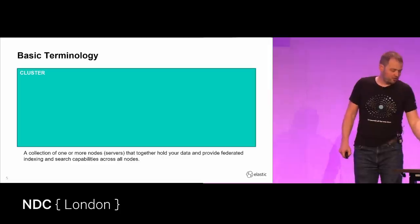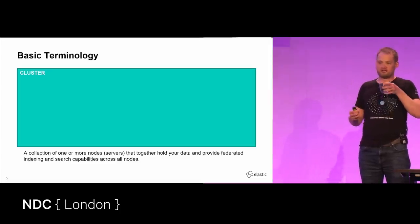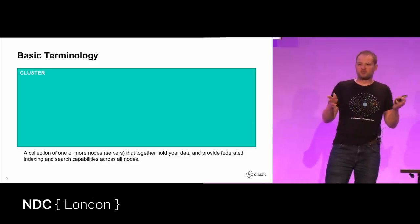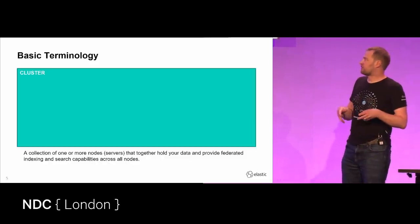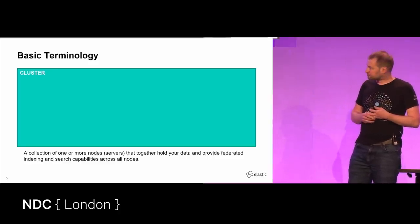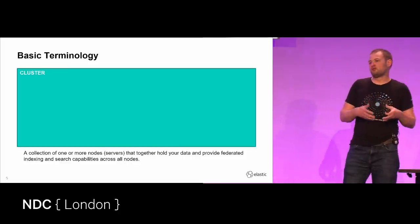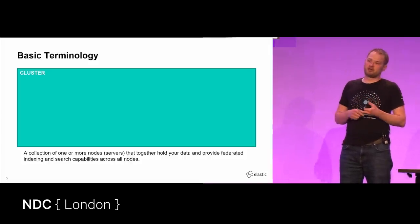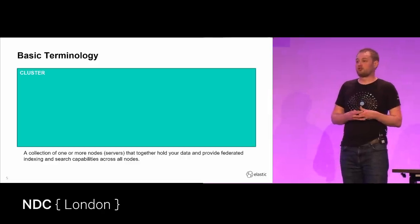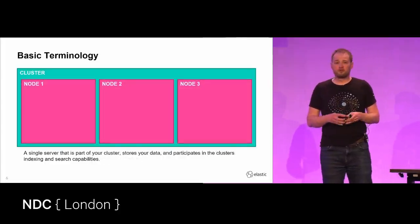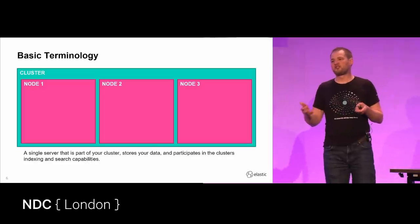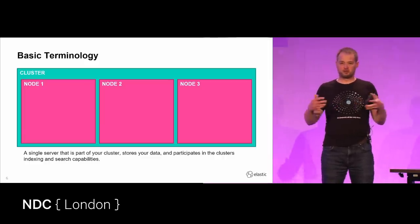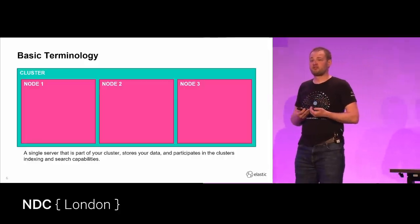Let's start with the real intro to Elasticsearch and some basic terminology. The first term is cluster — simply a collection of Elasticsearch instances. The cluster is how you logically group your data environment together, where all data is stored and federated indexing and searching capabilities happen. Nodes are really just instances of Elasticsearch. It might be a physical server, a VM, or a container — essentially that installation of Elasticsearch working together with other nodes to provide the services you need.